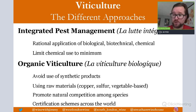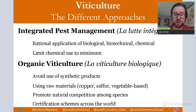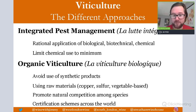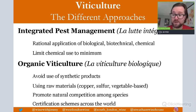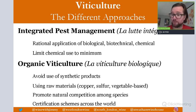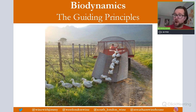Organic viticulture permits raw earth materials such as copper and sulfur, plus vegetable-based products, but with strict limits depending on location. The US has more stringent limits on certain elements compared to the EU. It further promotes natural competition among species, building on IPM and sustainable approaches, and there are various certification schemes worldwide to gain organic status.